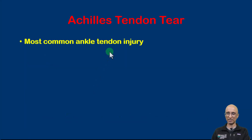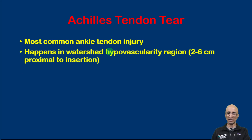In terms of Achilles tendon tear, it is one of the most commonly injured tendons in the region of the ankle. It classically happens in the watershed hypovascular region — the critical zone — which is approximately two to six centimeters from the insertion site at the calcaneum.